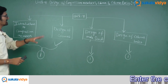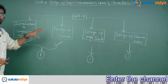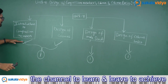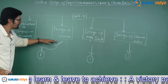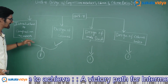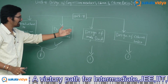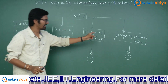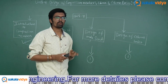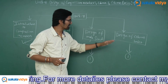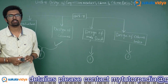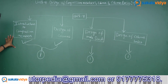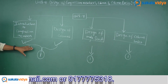For our convenience, chapter four has been broadly classified into four equal parts: introduction to compression members, design of columns — from these two we can expect one long answer; design of angle struts — one long answer; and design of column bases — one long answer for your main examination. So let us have a discussion on introduction to compression members, that is our first part.